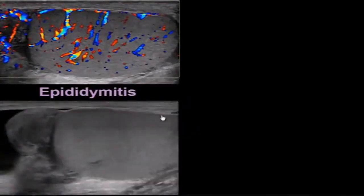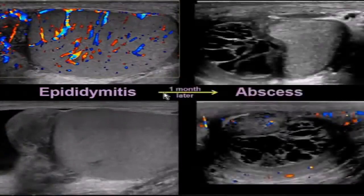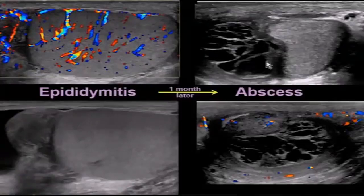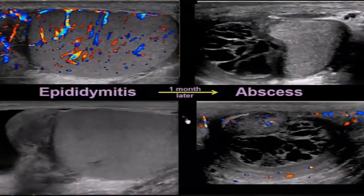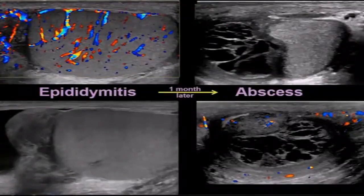This patient went on to develop an abscess — you can see a cystic complex fluid collection sitting adjacent to the testicle. This is an epididymal abscess that developed from the epididymitis. This does not happen too often, but it can happen, and ultrasound is a good way to monitor these patients.